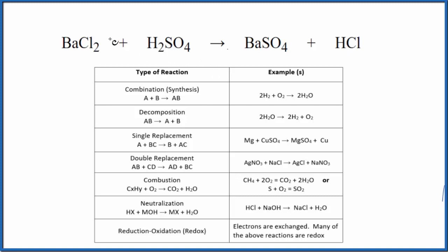When we look at the equation, we can see we have pairs of positive and negative ions for each one of these substances. That makes us think we probably have a double displacement reaction.